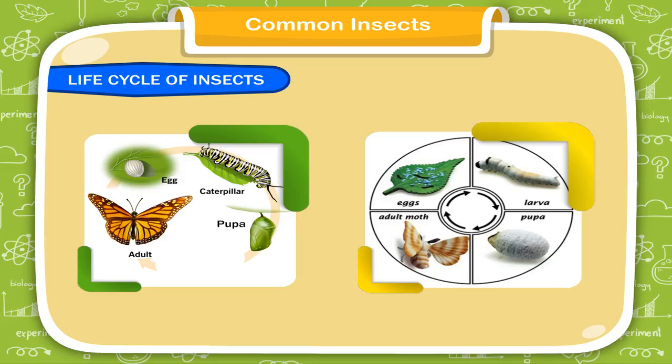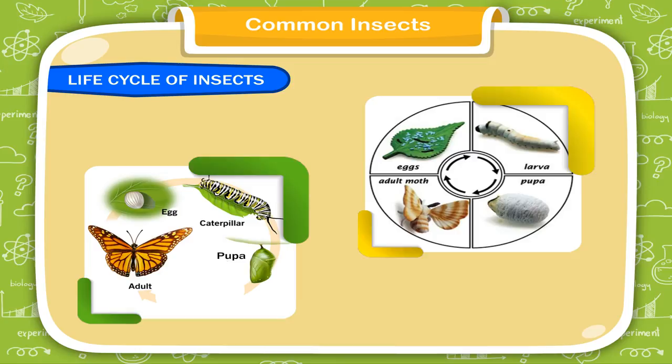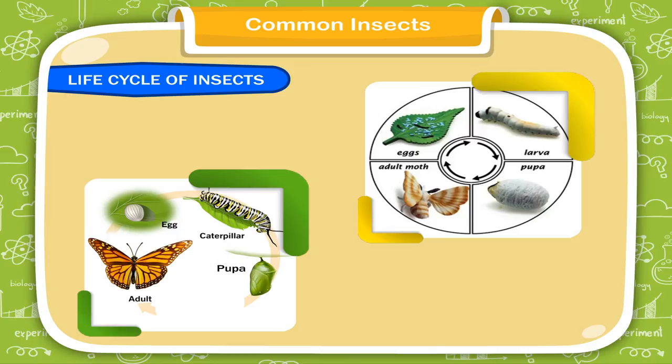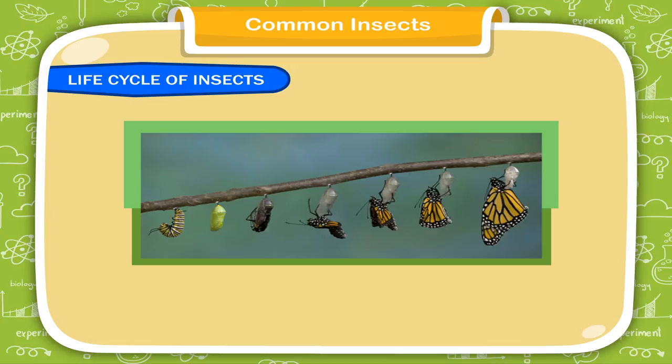An egg hatches into a larva called a caterpillar. It feeds on leaves and grows. Then it forms a shell around its body called a cocoon. This stage of growing is called pupa. Inside the pupa, it grows into an adult and comes out. This type of growing in stages is known as metamorphosis.